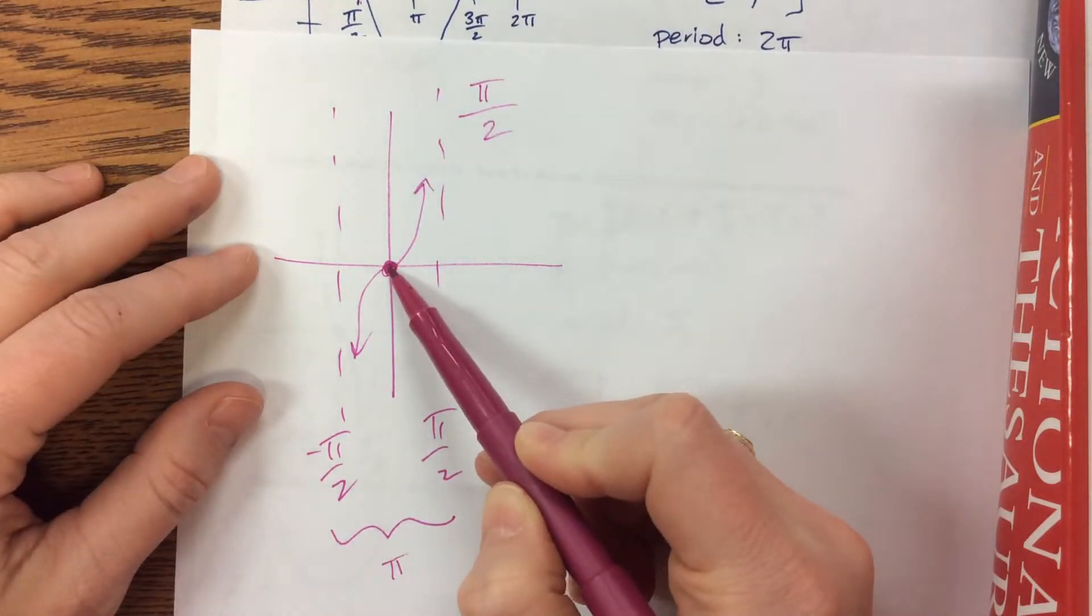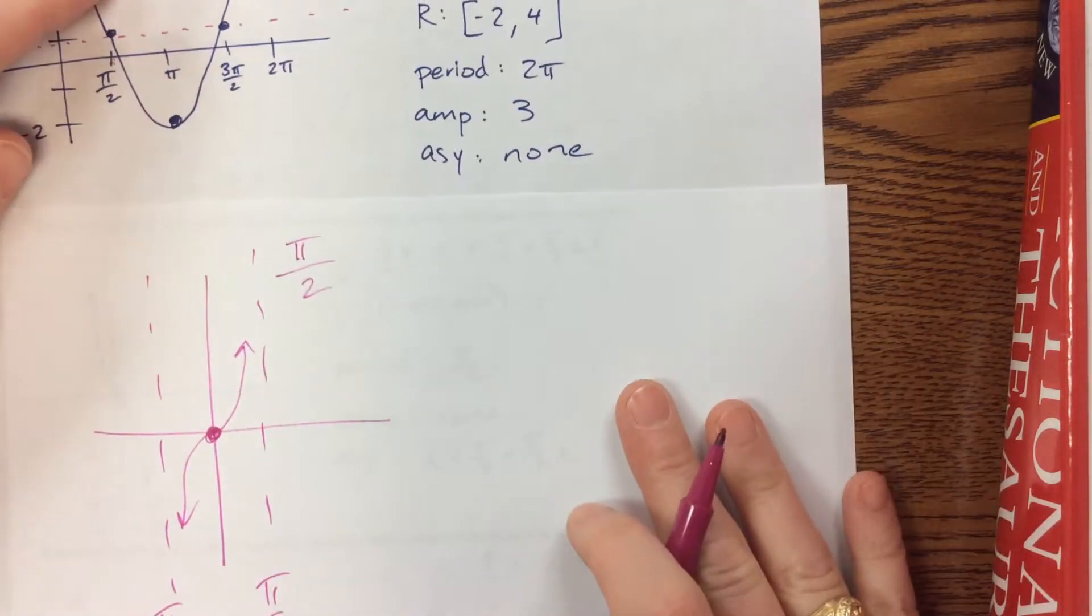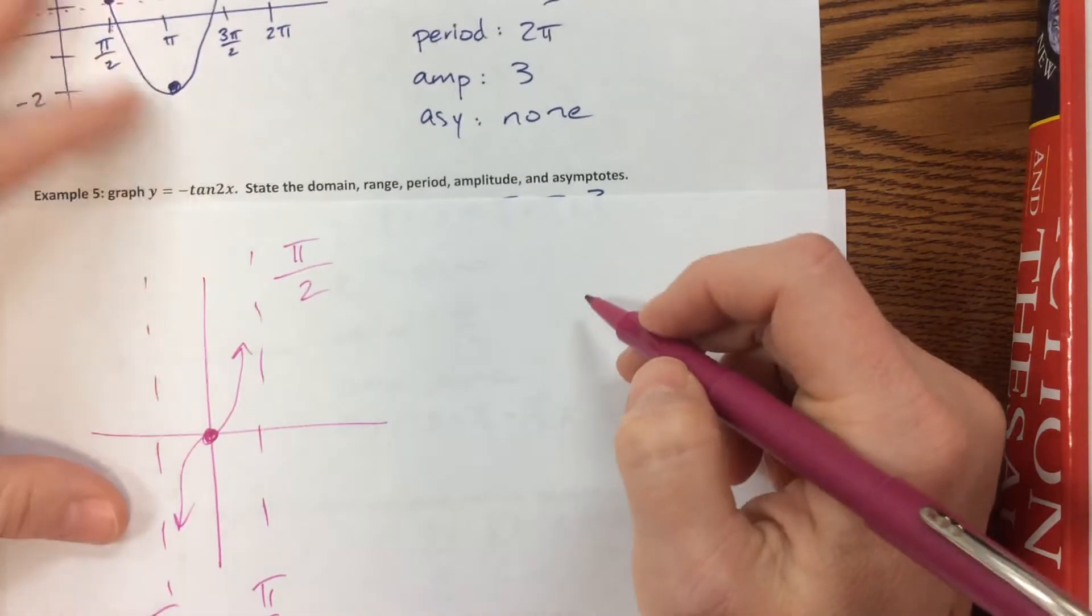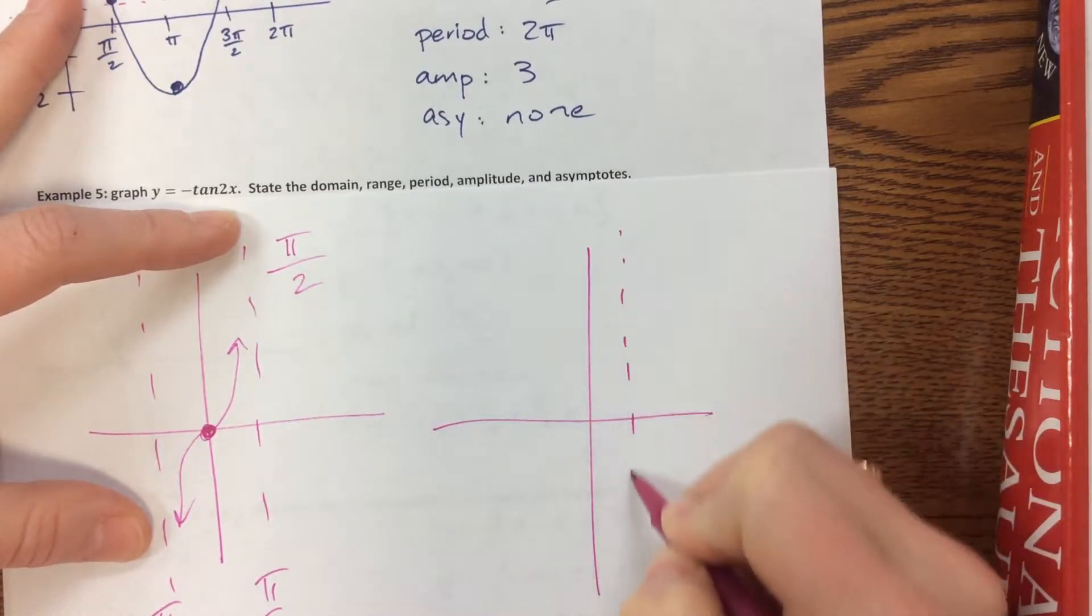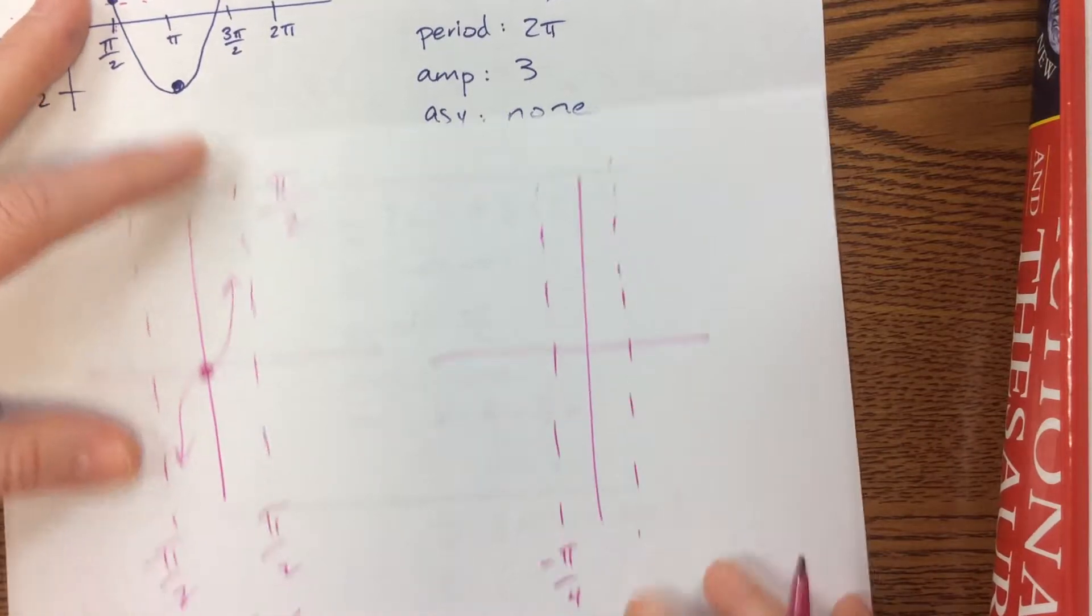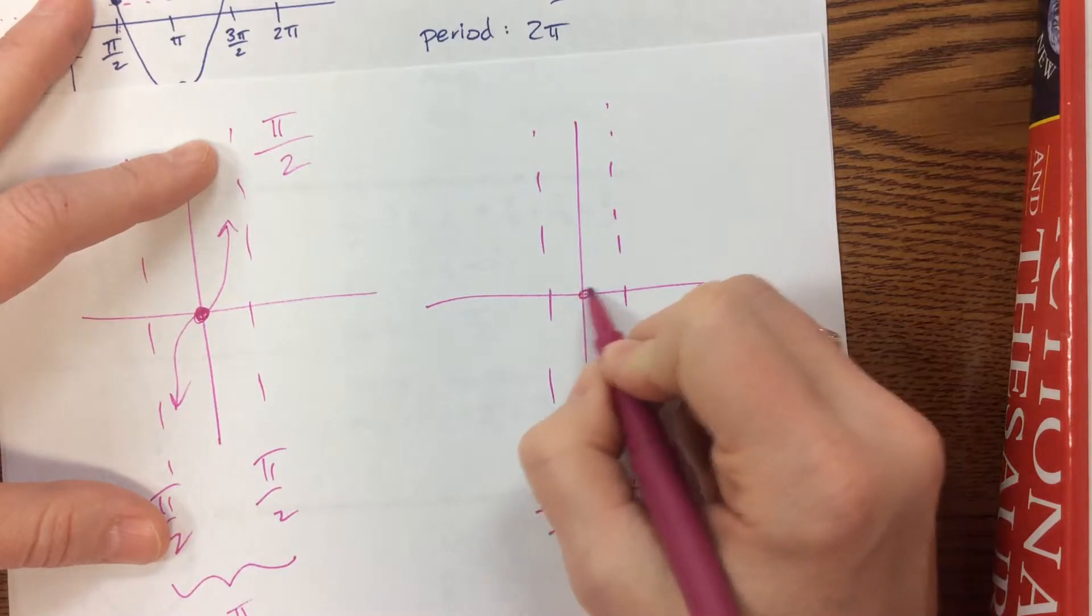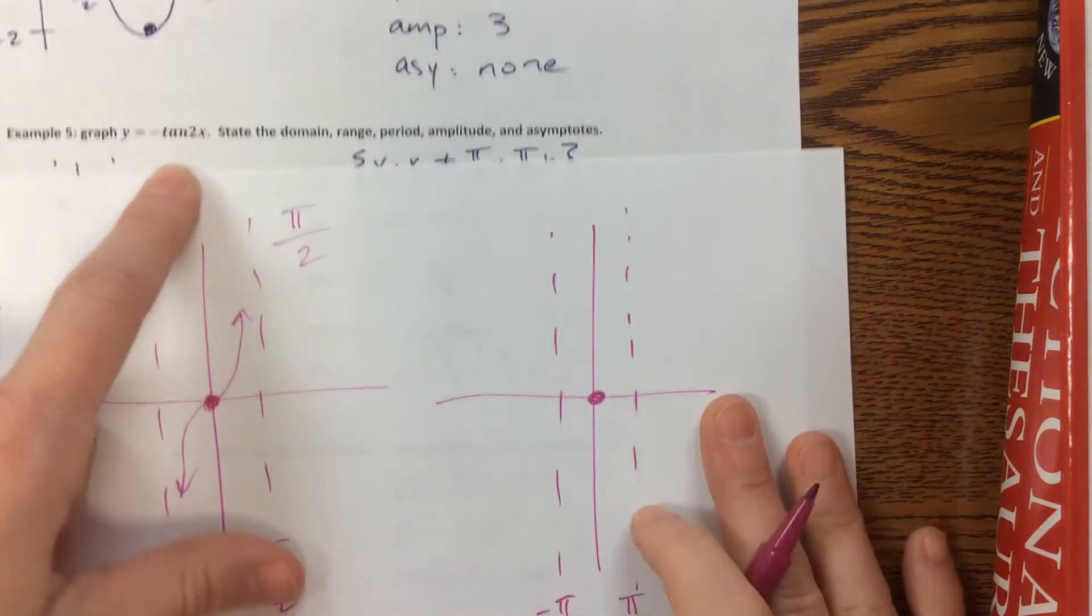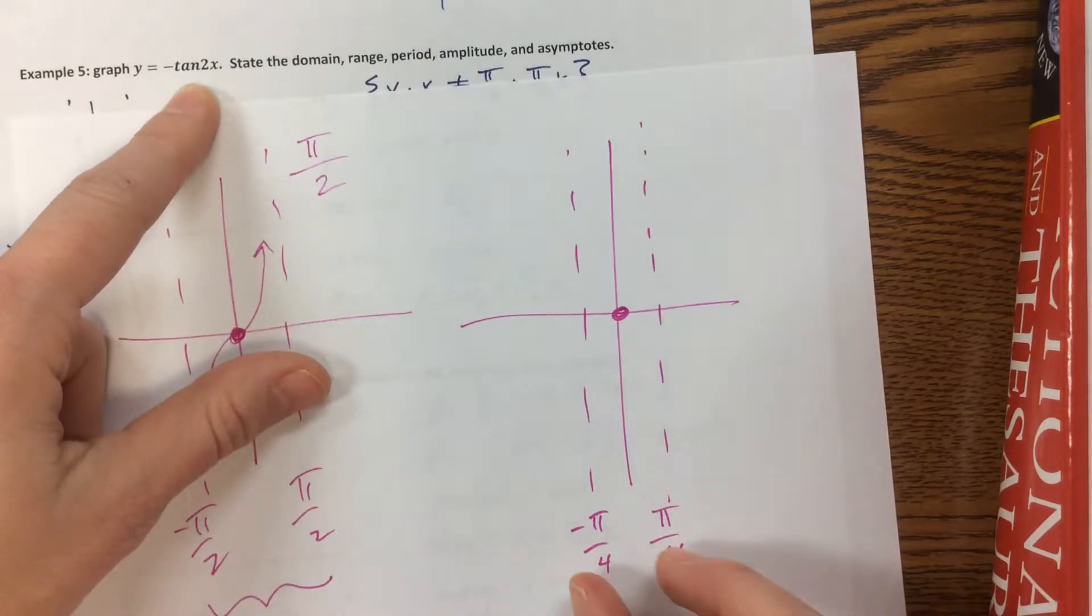But now everything got squished in. Well, that squishing in doesn't change this 0, but it does change where these asymptotes are. So what that will do for us is it'll now make these come in half of that distance. So this is now negative π/4 and then a positive π/4. And we're still here. And that's how we take care of the period of π/2. So notice these are now π/2 units apart.